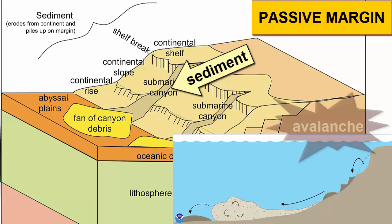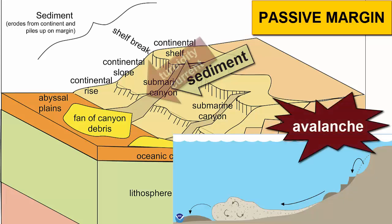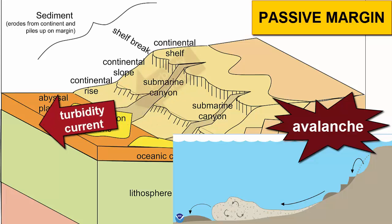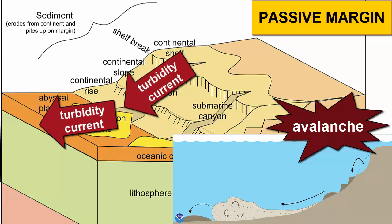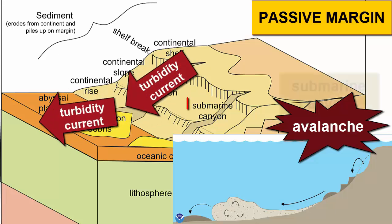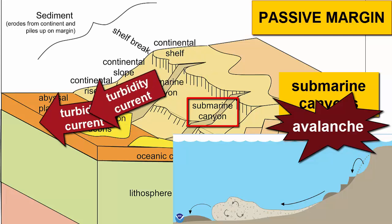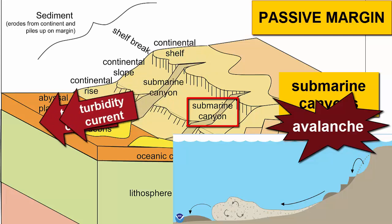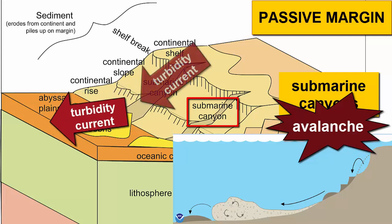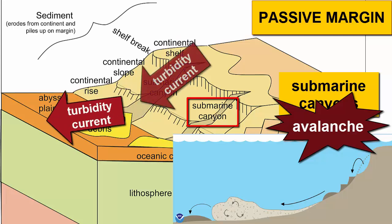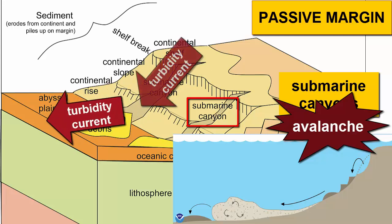When large avalanches of sediment occur, which we call turbidity currents, they carve out deep channels or valleys called submarine canyons. These canyons can get quite deep and extensive as successive turbidity currents continue to occur in the same location and carve the valleys out deeper and deeper.